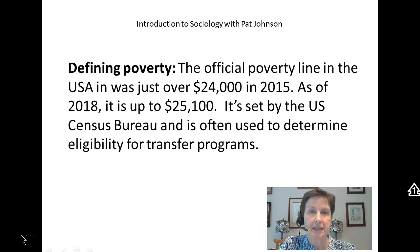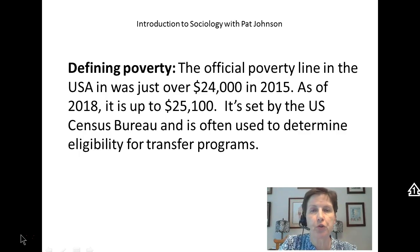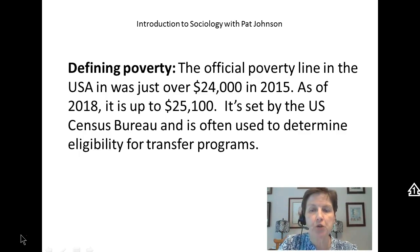Defining poverty is difficult, but there is a government statistic that is used — it's called the poverty line. The official poverty line in the United States was just over $24,000 in 2015, according to your textbook. In 2018, it's up to $25,100.